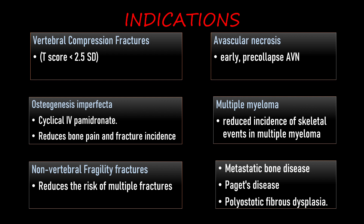Bisphosphonates are indicated in vertebral compression fractures, which usually occur in osteoporotic patients in whom the BMD T-score is less than -2.5 standard deviations. Bisphosphonates are also indicated in osteogenesis imperfecta, in which IV pamidronate is administered. The outcome is that it reduces bone pain and decreases fracture incidence.